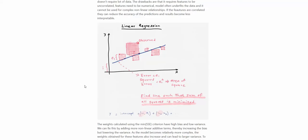Linear regression is easy to interpret and set up, but there are some limitations. One of the biggest is that all these variables — x1 and x2 — need to be uncorrelated with each other. You cannot have multicollinearity among them, because if that happens, results become less interpretable and accuracy may suffer. A downside of multicollinearity is that these weights start inflating — w1 and w2 all start becoming very high.